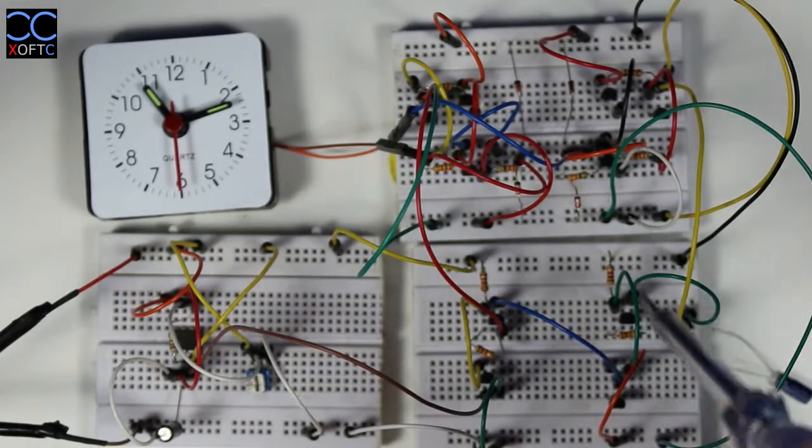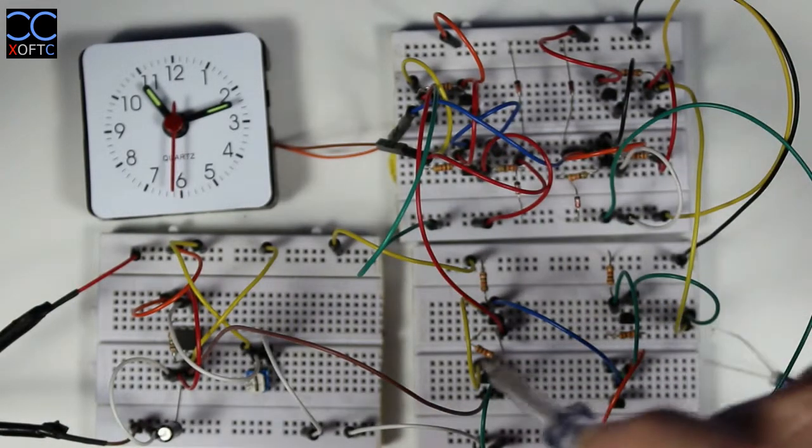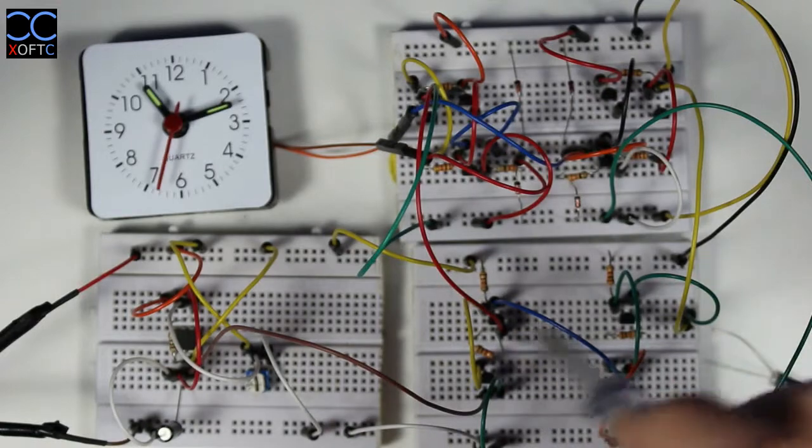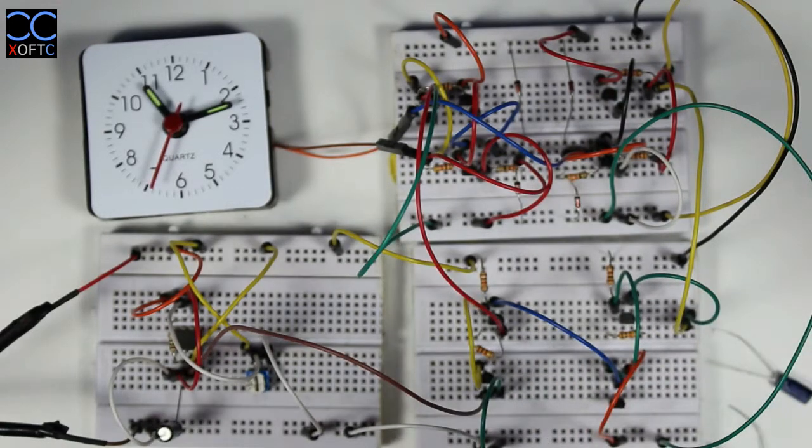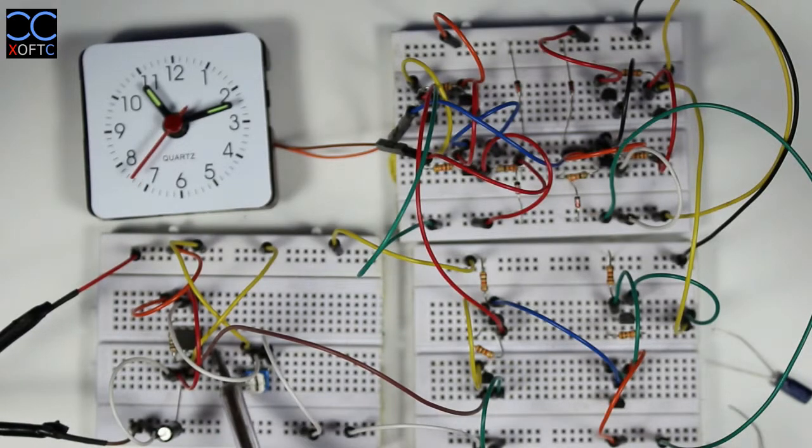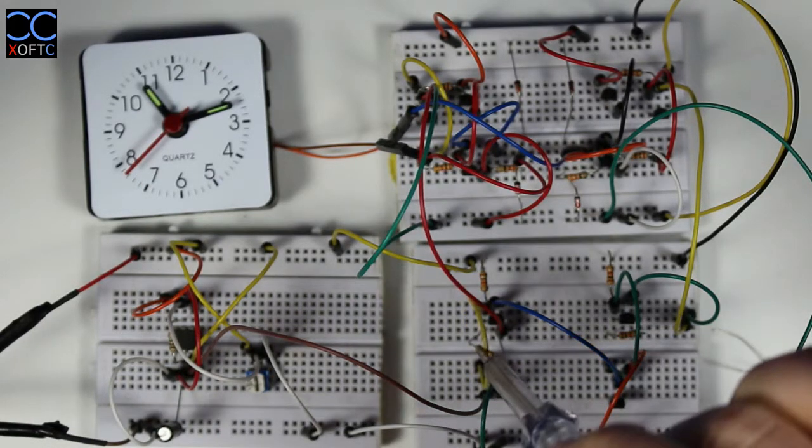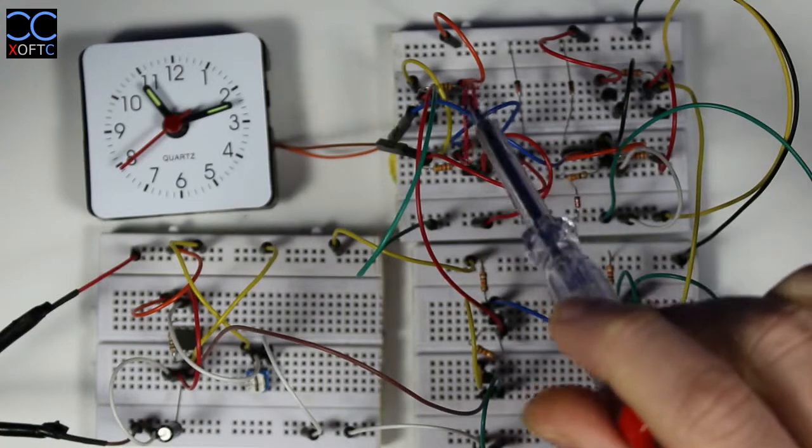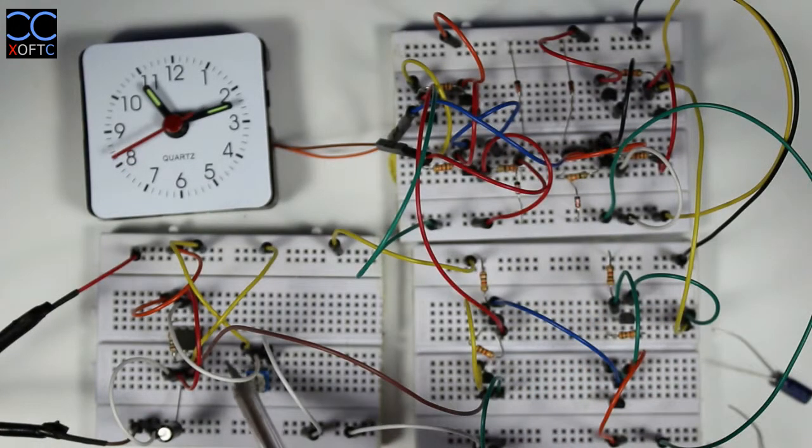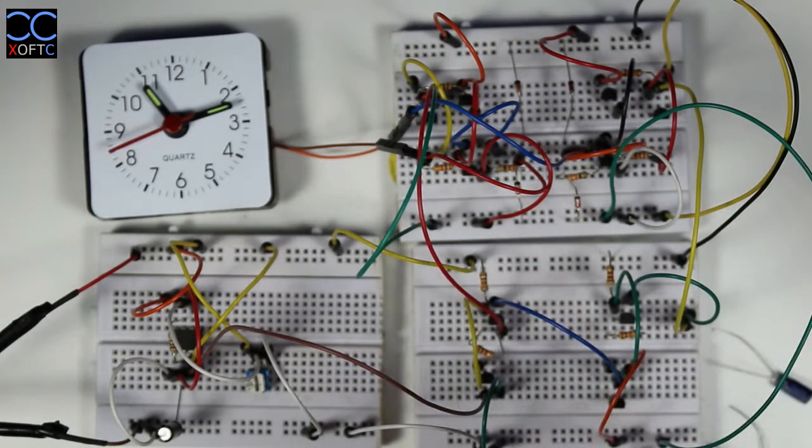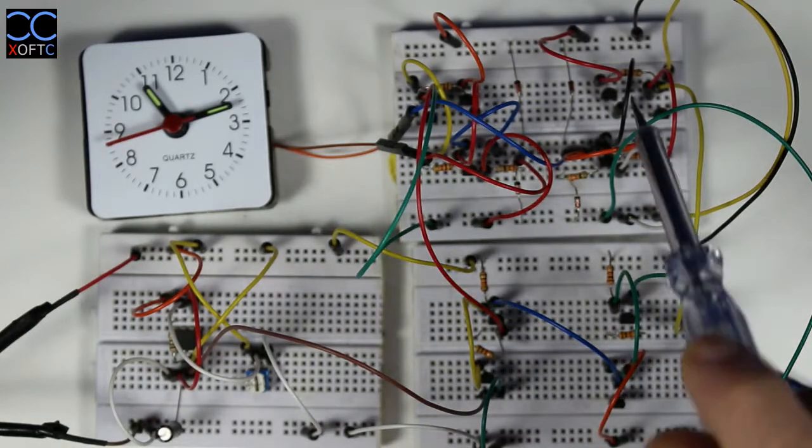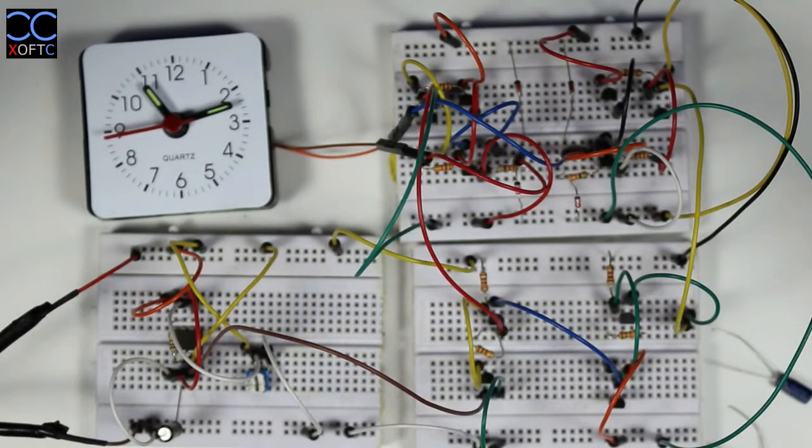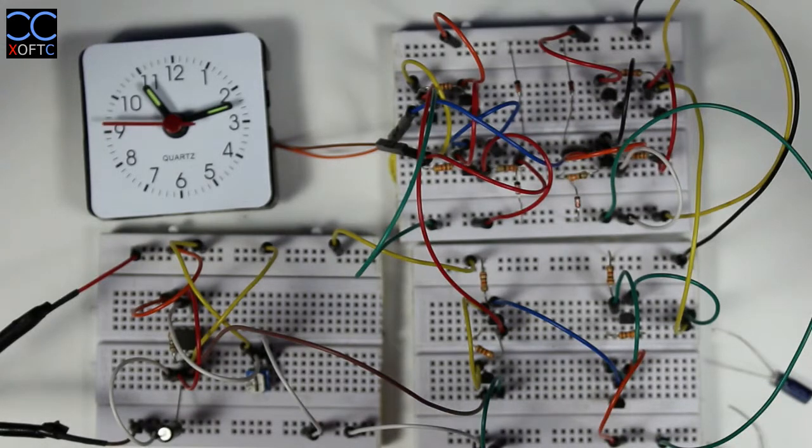The way it works is that we have two NOT gates here and our timer. When the timer gives low, this gate goes high and drives one direction. When the timer goes high, this gate goes low and this gate goes high, and that drives the other direction. That's pretty much it.